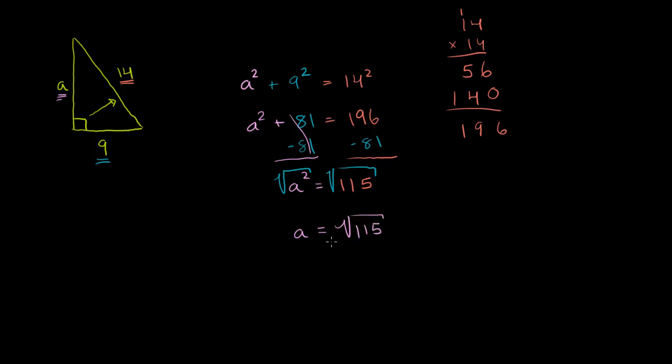And let's see if we can break down 115 any further. So let's see, it's clearly divisible by 5. If you factor it out, it's 5. And then what is it? 5 goes into 115 23 times. So both of these are prime numbers, so we're done. So you actually can't factor this anymore. So a is just going to be equal to the square root of 115.